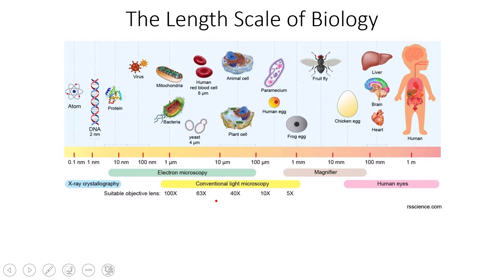When we look at this particular image — the length scale of biology — you can see different areas: what the human eye can see without magnification, a magnifying glass which gives a little bit of magnification, the conventional light microscope which we use in class, and the range that electron microscopy can provide.